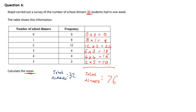And so therefore to get the mean we need to do total dinners divided by total students, so 76 divided by 32, which gives an answer of 2.375. And that is our answer.